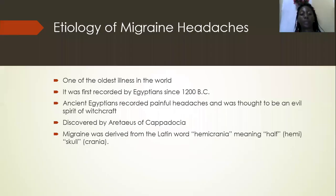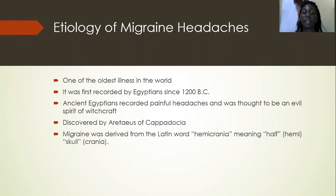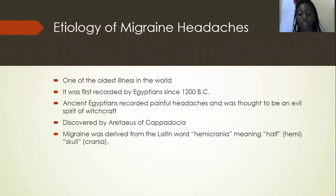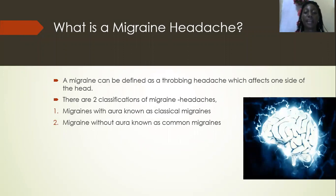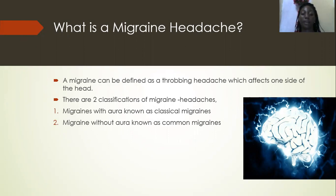History of migraine headache: migraine is an ancient illness recorded by the Egyptians in 1200 BC. The ancient Egyptians recorded painful headaches that were thought to be an evil spirit or witchcraft, and concluded the only relief was by drilling a hole in the skull, called trepanation. Arterius discovered in the second century and described unilateral headaches of migraines linked with vomiting. Migraine can be defined as a throbbing headache affecting one side of the head. It is derived from the Latin word hemicrania, where hemi means half and crania means skull. There are two classifications: migraine with aura and migraine without aura.